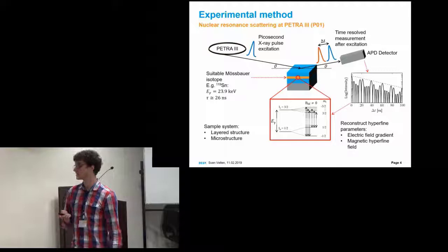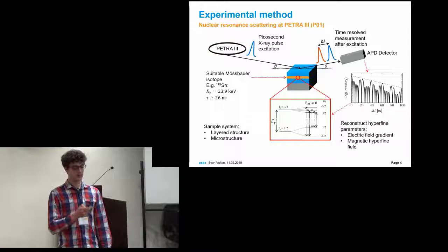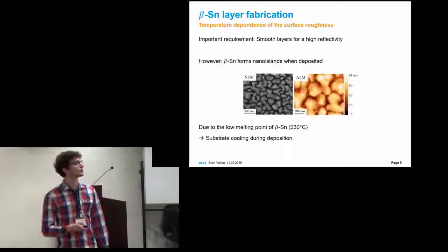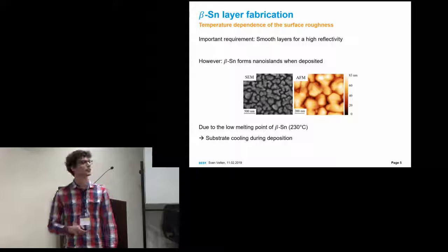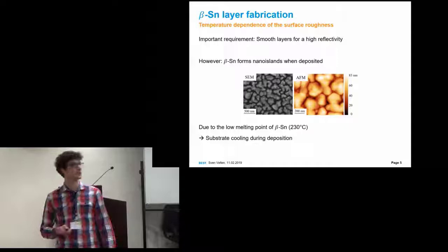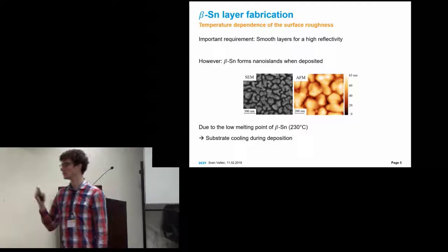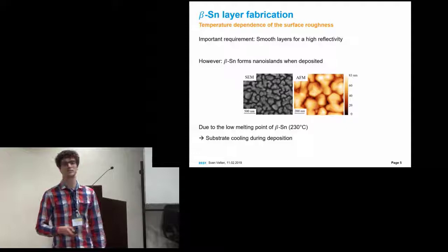Now, that all these experiments work, we have to make sure that these layers are very smooth to get a strong reflectivity signal and to also have defined layers. As I already told you, beta-tin forms nano-islands when it's deposited under normal conditions. This was supposed to be a 20 nanometer film, which is clearly not here. This is very likely due to the low melting point of tin at 230 Celsius. Room temperature is already pretty close to this melting point. Our idea was to cool down the substrate during the deposition.